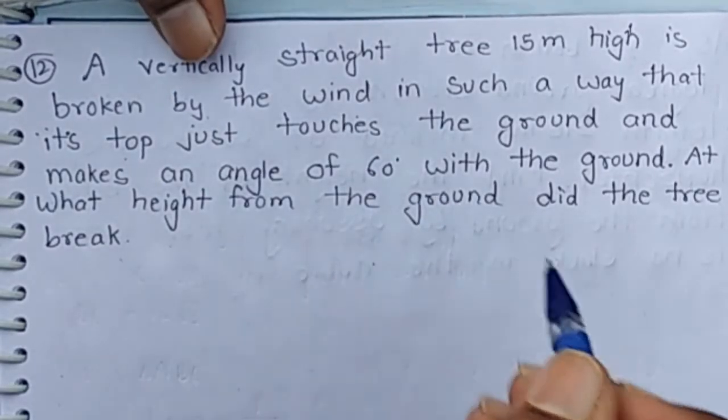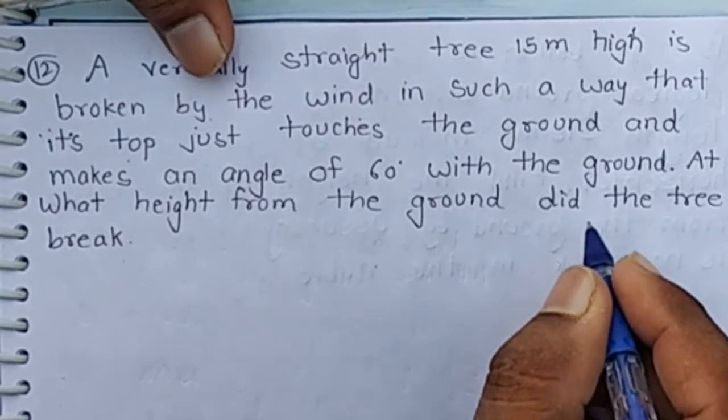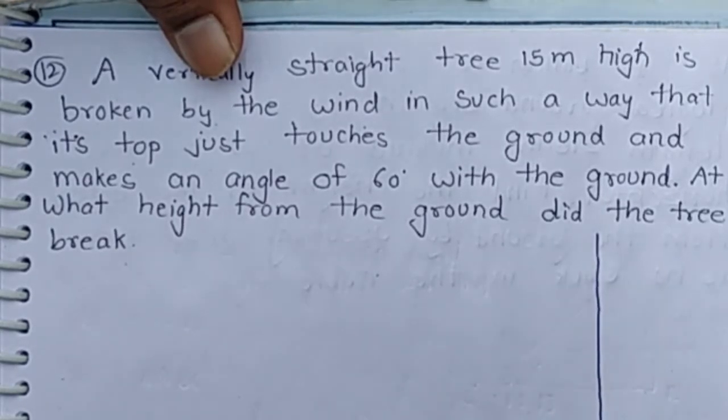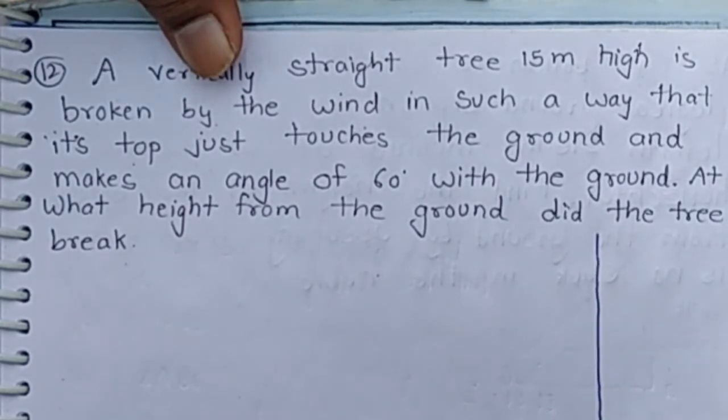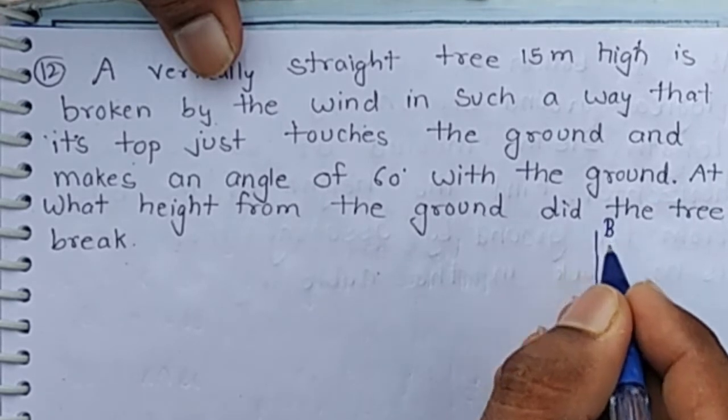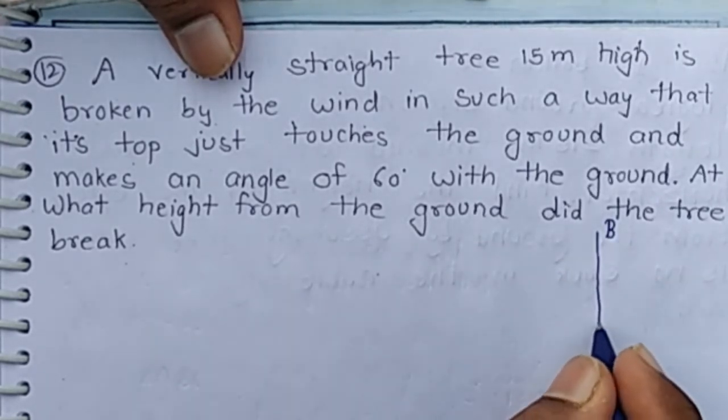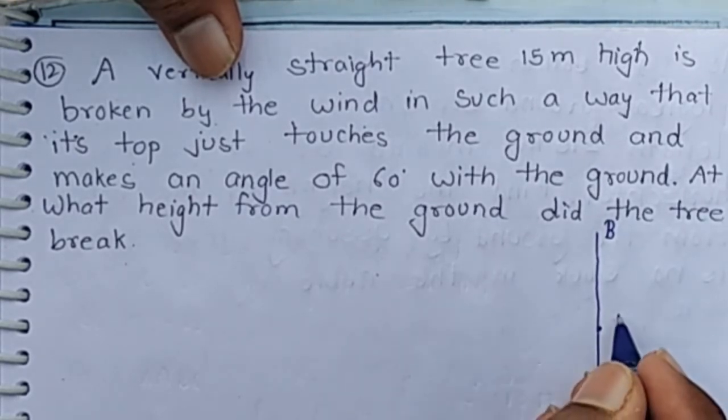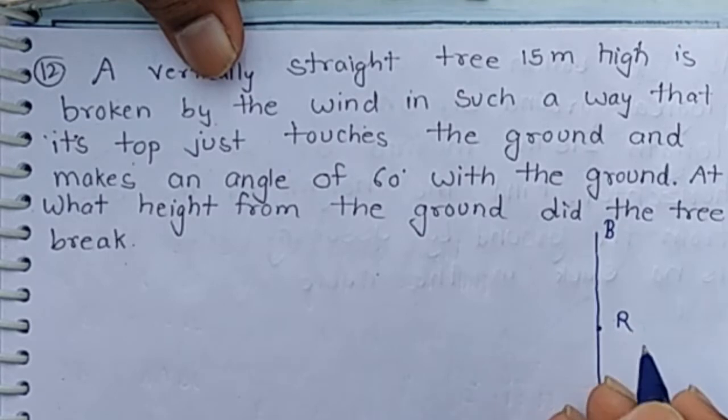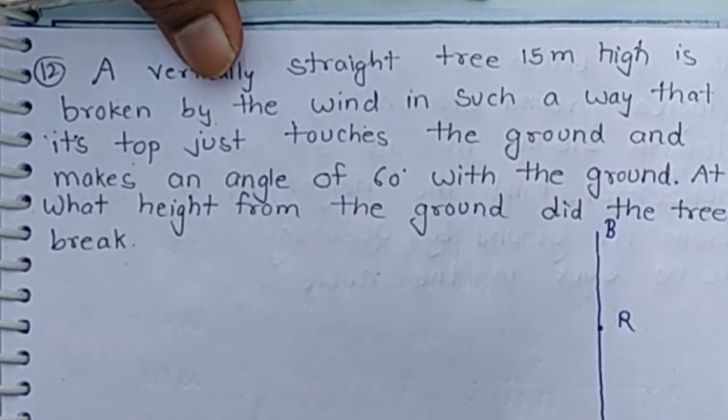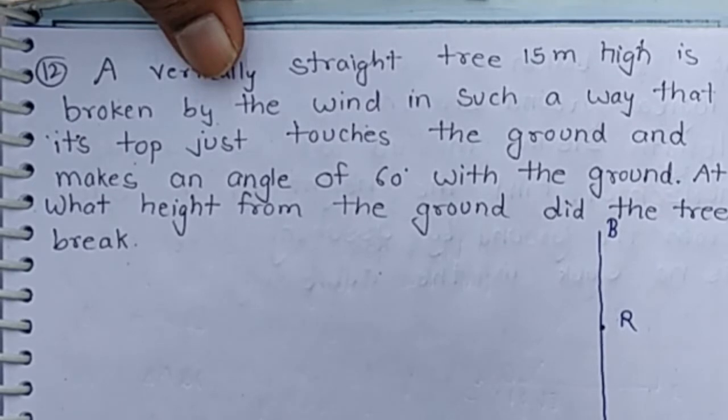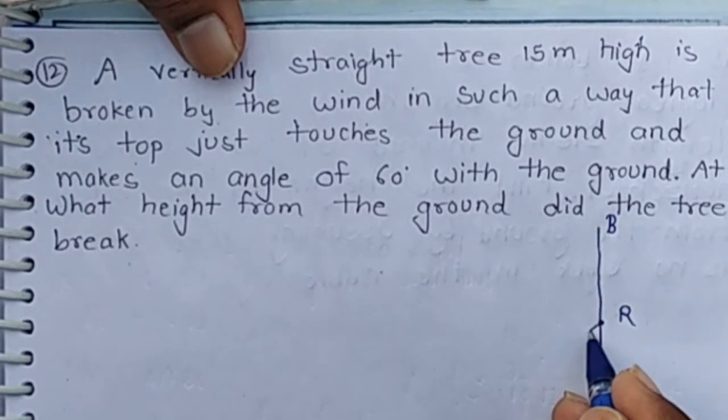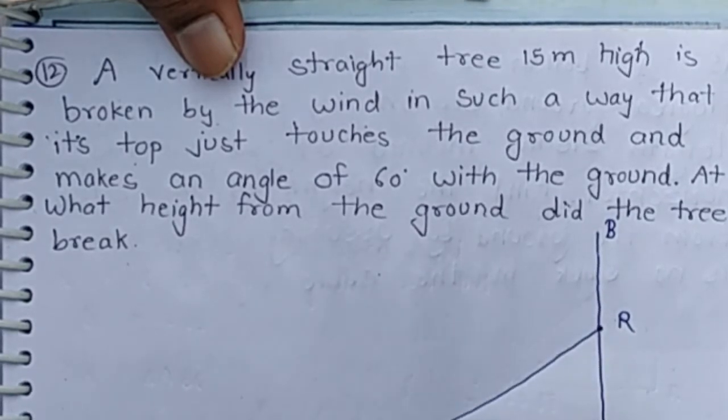At what height from the ground did the tree break? Let AB is the tree and it is broken at point R such that the broken part BR touches the ground at point C.